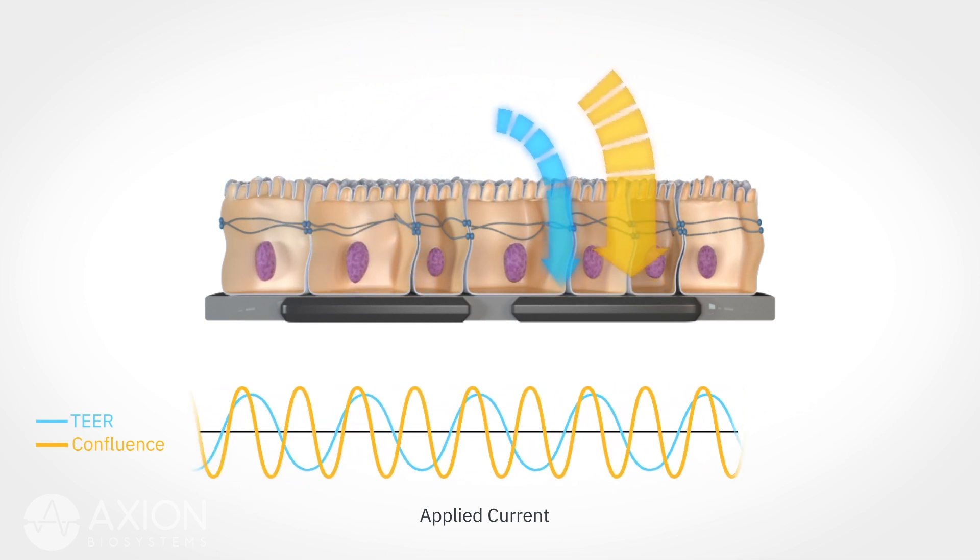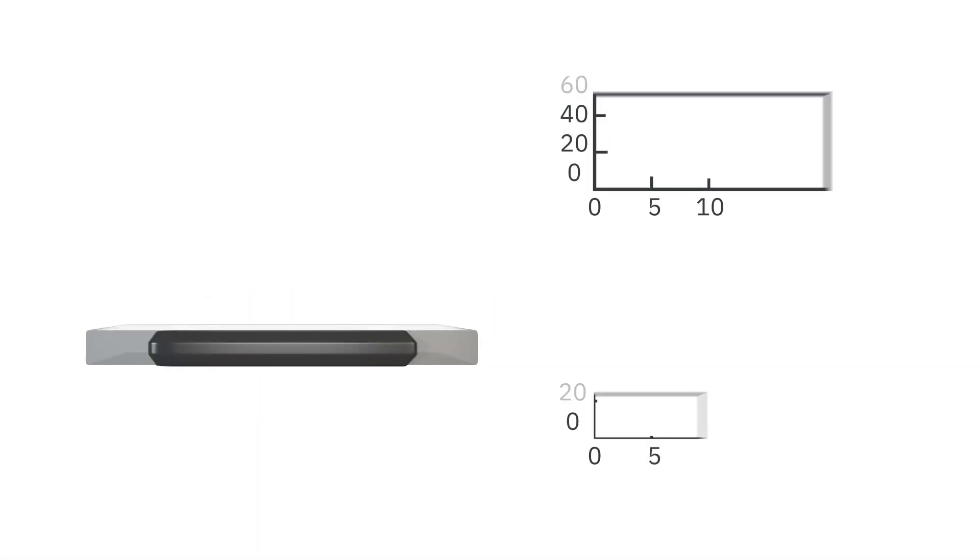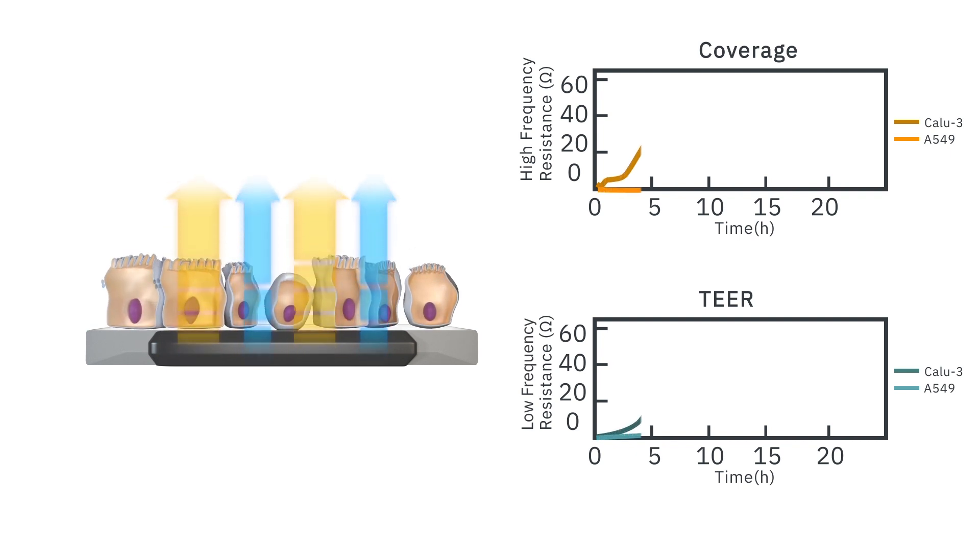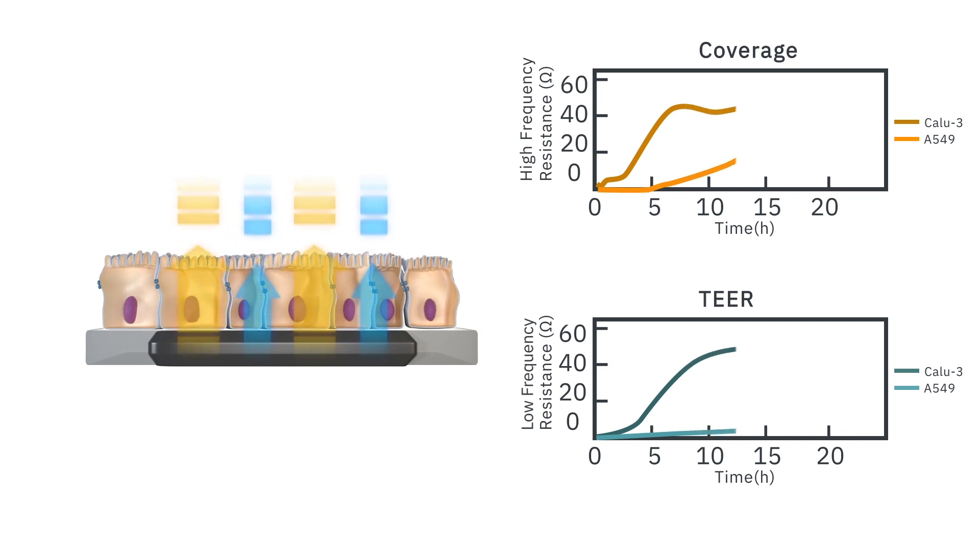In this example, both CalU3 and A549 cell lines are of epithelial origin, and both cell lines reach full coverage within 24 hours. However, only the CalU3 line expresses tight junction proteins, so it produces a much stronger barrier, which stabilizes only after the cells reach confluence. Without measuring confluence, it is difficult to know when TIR will be stable.